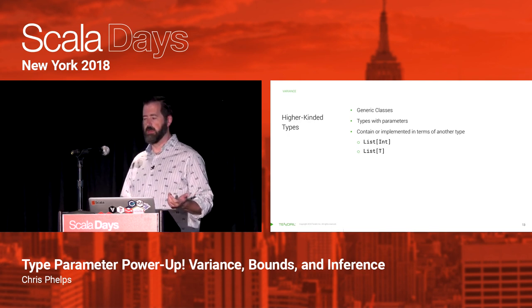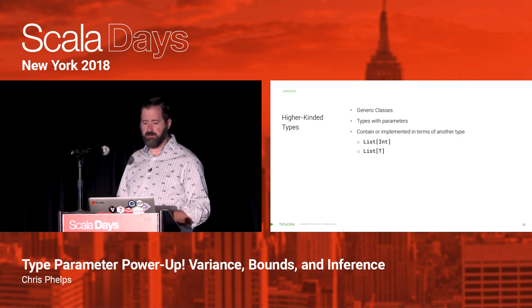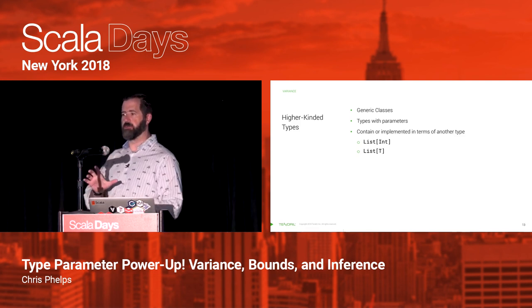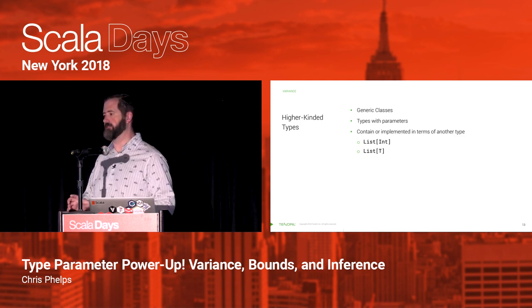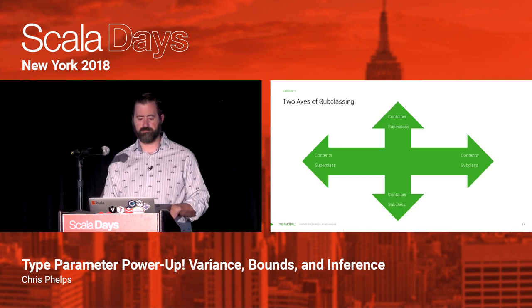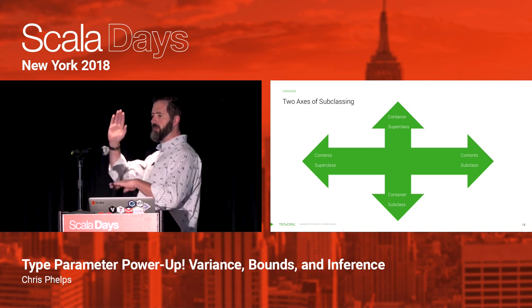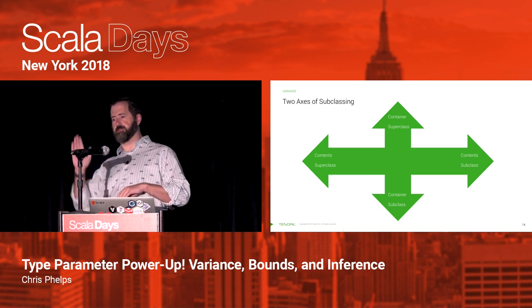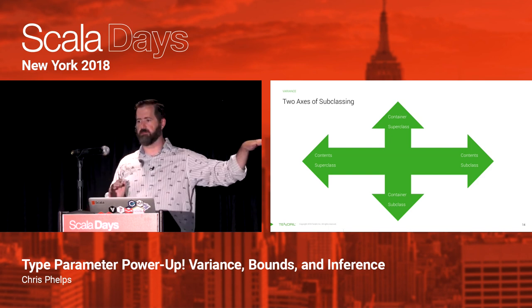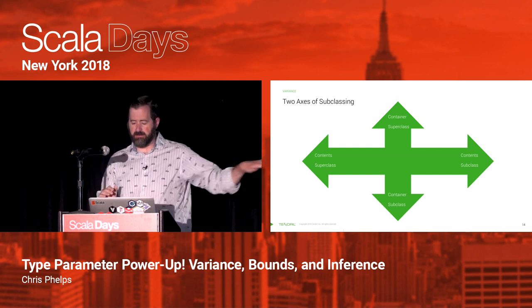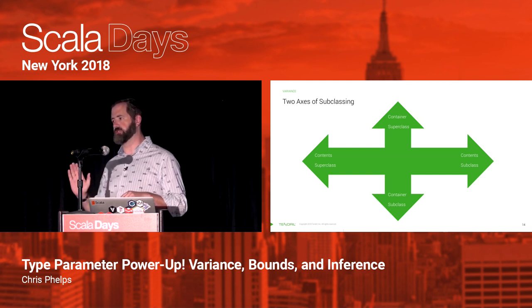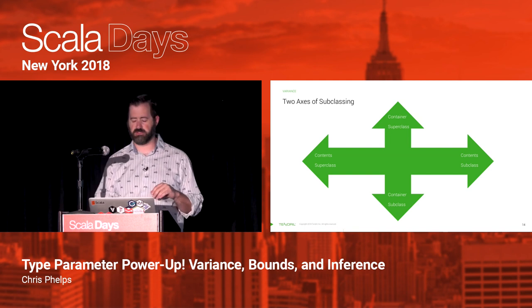So let's talk about parameterized types, also sometimes called generic classes. You can think of them as types that have a parameter, and so they usually contain or are implemented in terms of some other type — things like List of Int, more generally List of T. And what this gives us is two different axes of subclassing: the superclass-subclass relationship of that container, but also the subclass-superclass relationship of the parameter — the thing inside. And this is where we're going to get to variance.